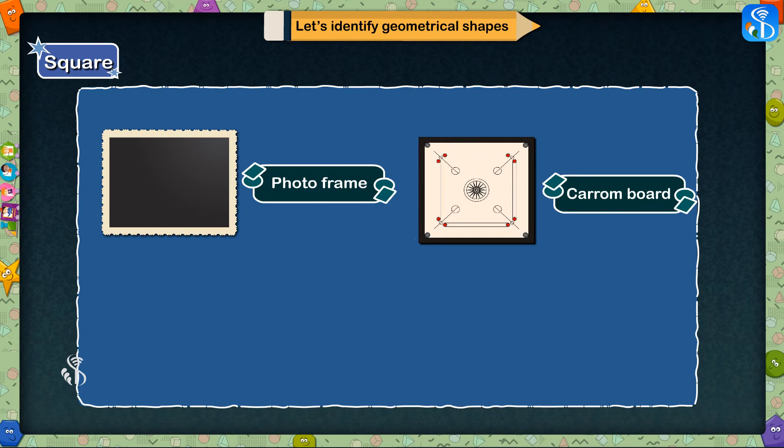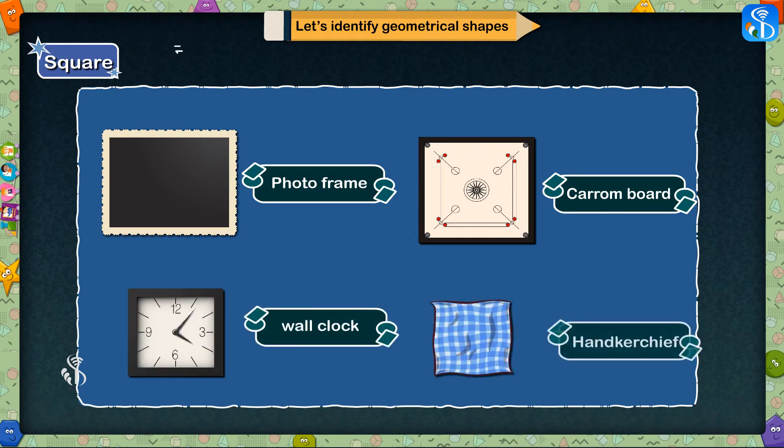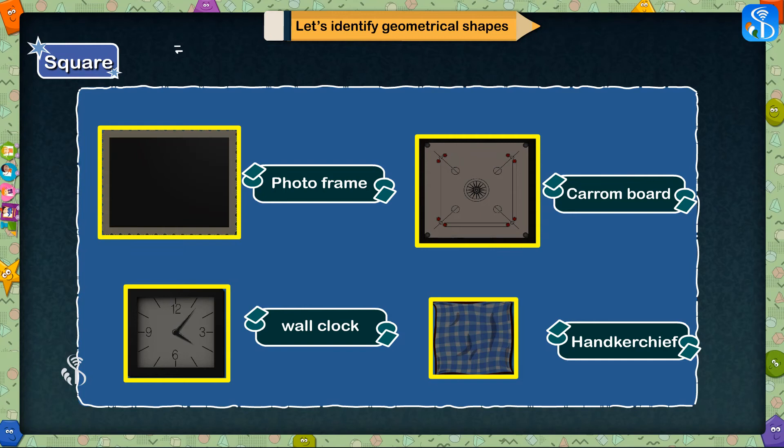A photo frame, carom board, some wall clocks, and a handkerchief are all examples of this shape.